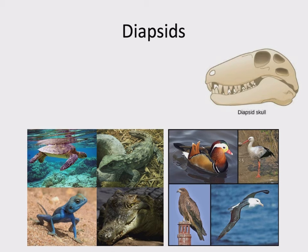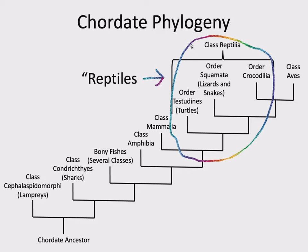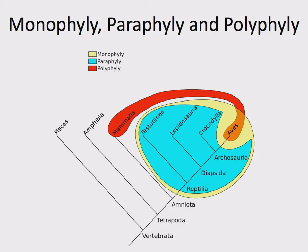Now it's finally time to talk about reptiles. If you try to draw a circle around what we call a reptile, it's an ancestor and not all of its descendants — this is a paraphyletic group. The example we've been using all quarter has been reptiles as a paraphyletic group: lizards, turtles, and crocodiles, but not including birds. Birds are not reptiles, so it's excluding that group — it's paraphyletic.